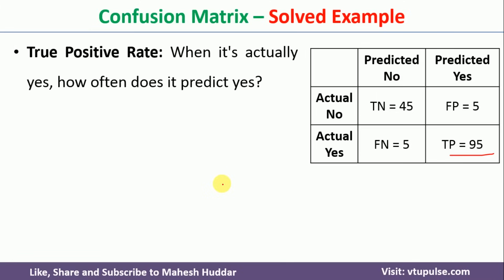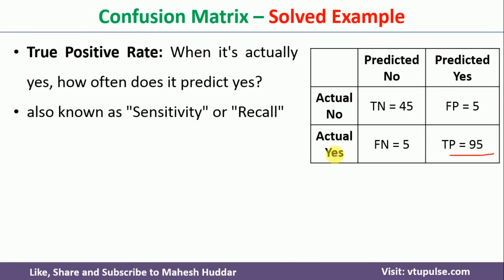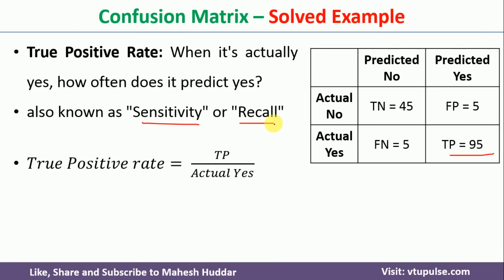The next performance metric is the true positive rate — when a particular example is yes, how often it is predicted as yes. The total yes examples are 100 and the total number of times predicted as yes is 95. So this is TP divided by actual yes examples, that is 95 divided by 100. It is also called sensitivity or recall, giving 95%.